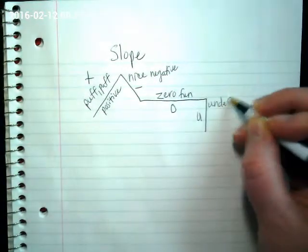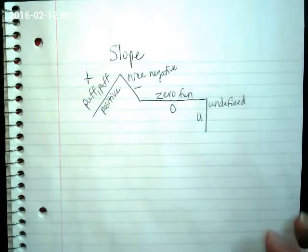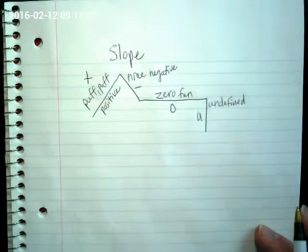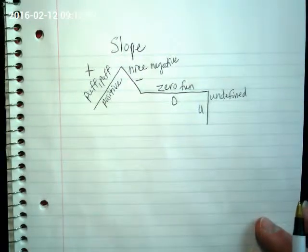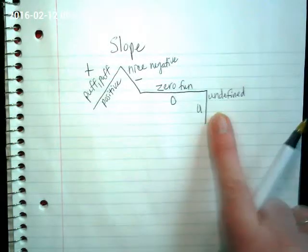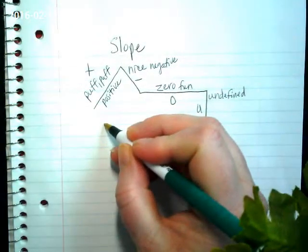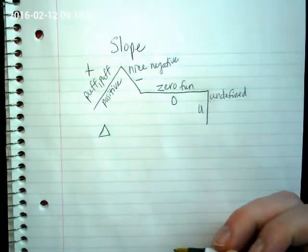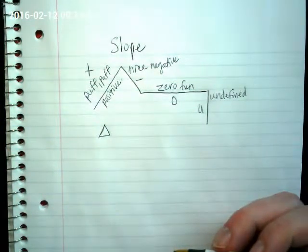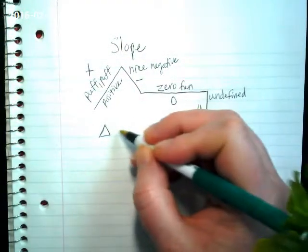And remember we whisper it - it's a curse word in math, not really, that's just a joke. We're going to talk a little bit about why this is undefined today. This triangle is an old symbol, I believe from Greek, for the word change.